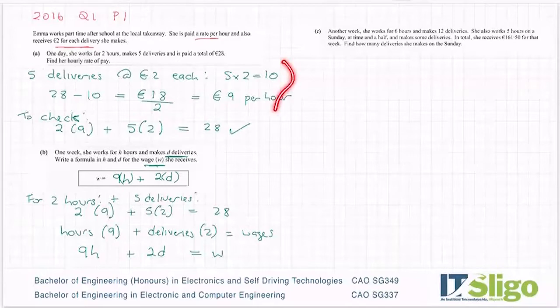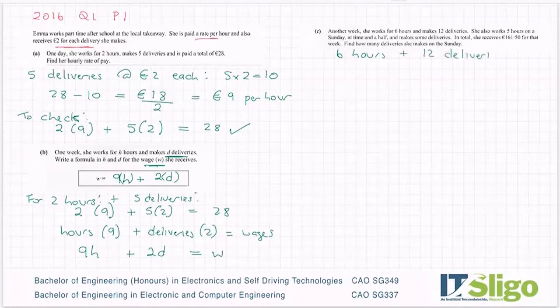So 10 marks for the first part, five marks for this one, and then 10 for part C. So part C reads as follows: Another week she works for six hours and 12 deliveries. She also works five hours on a Sunday at time and a half and makes some deliveries. In total she receives 161.50 for that week. Find how many deliveries she made on the Sunday. Right, okay.